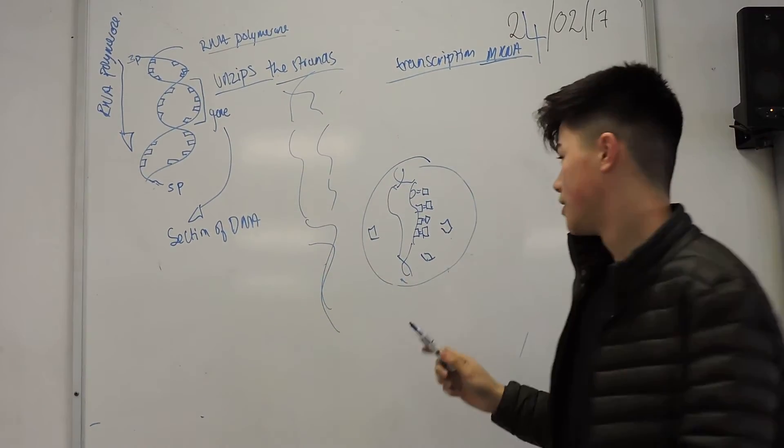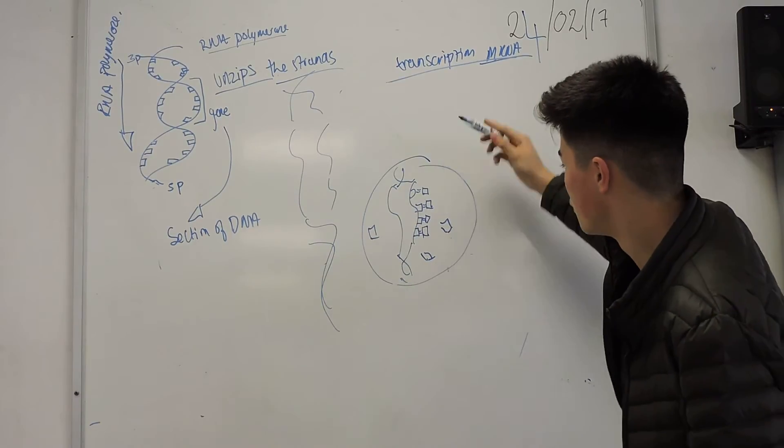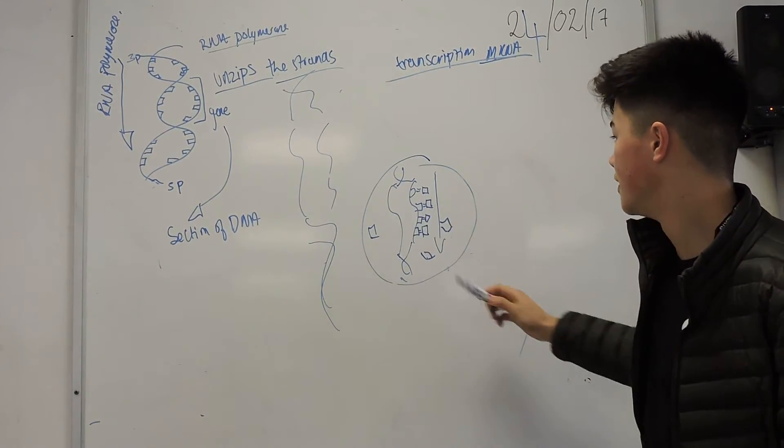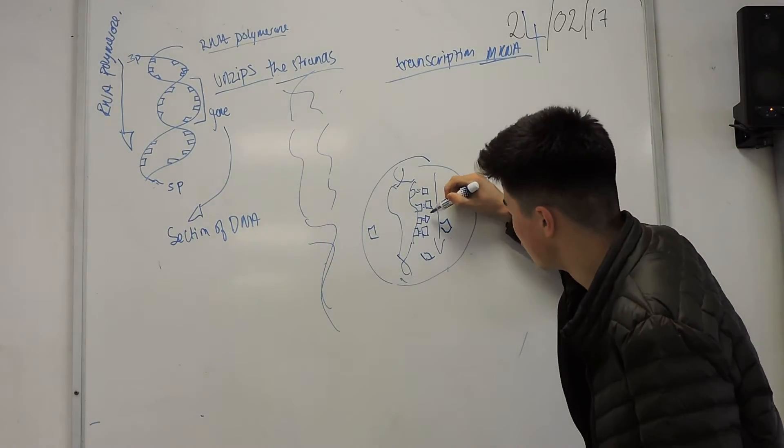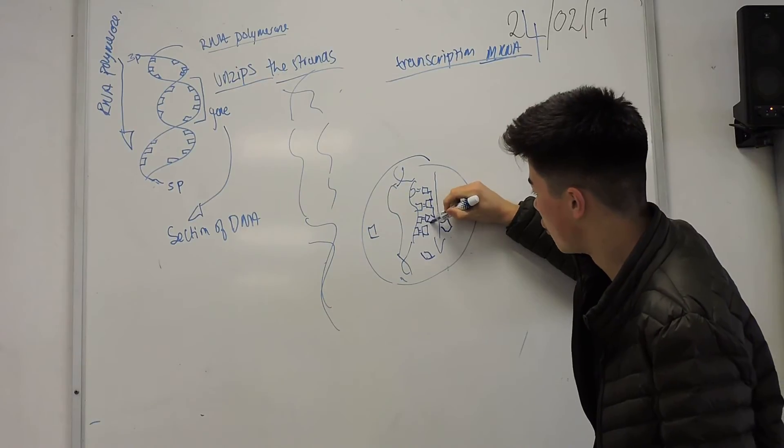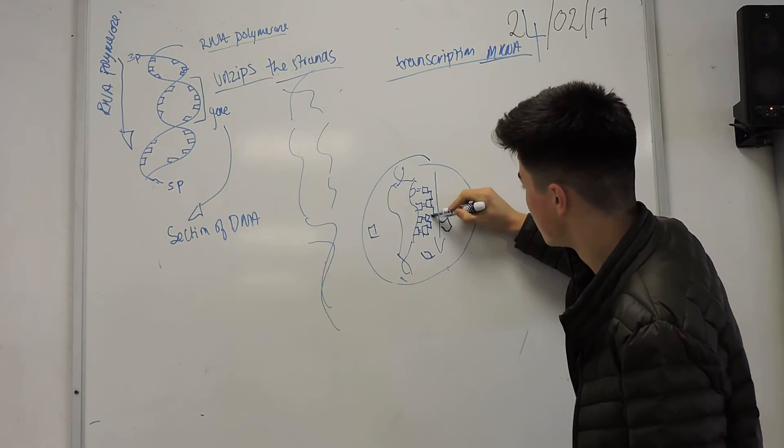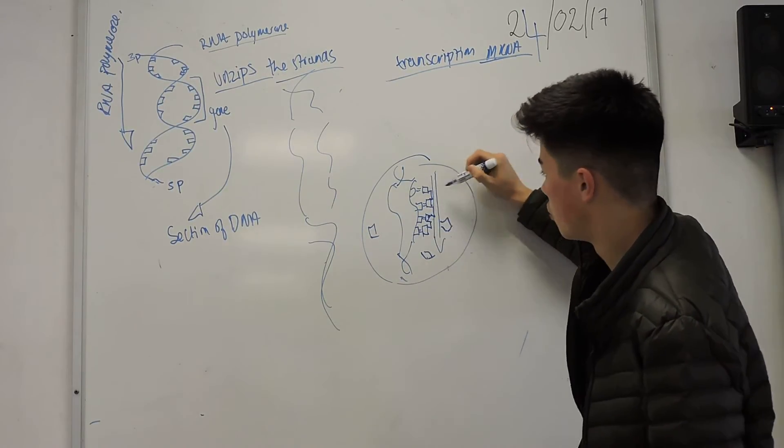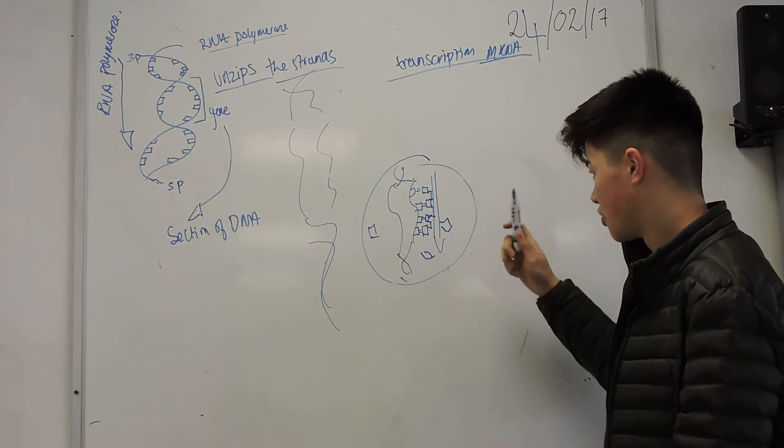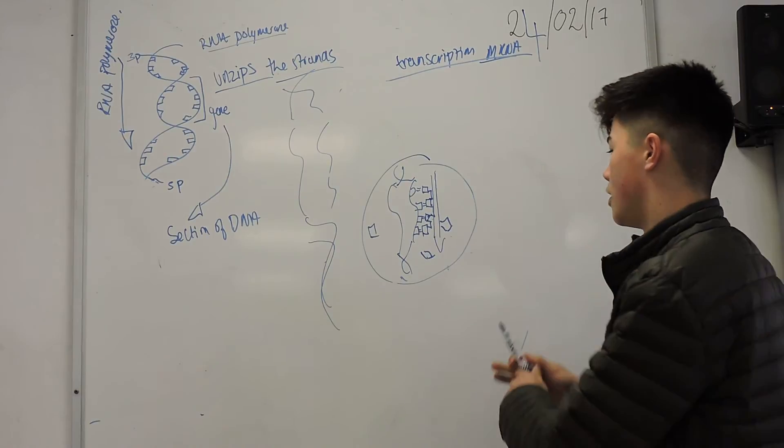Now RNA polymerase is still moving down this way. The nucleotides are attracted, and it will form a backbone between the RNA nucleotides, creating almost like a full strand of the messenger RNA molecule.